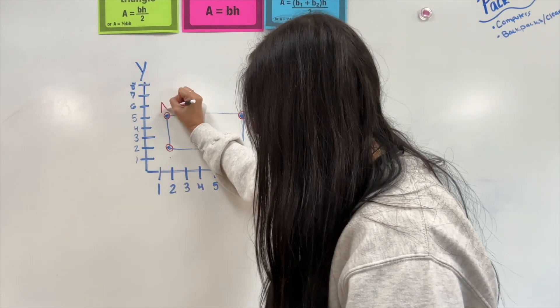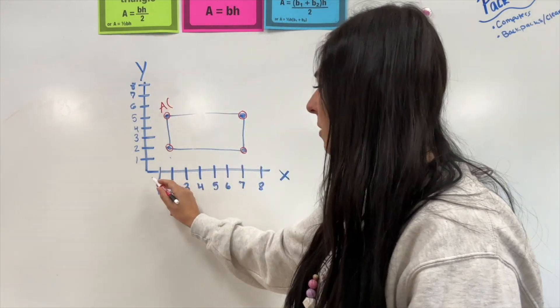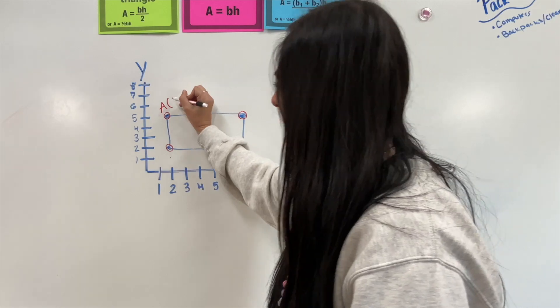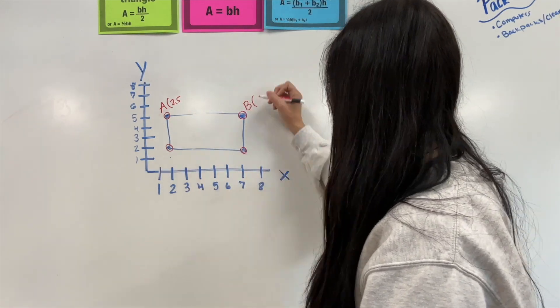So, we have A, whose coordinates are going to be 2, 5. We're going to have B, whose coordinates are 7, 5.